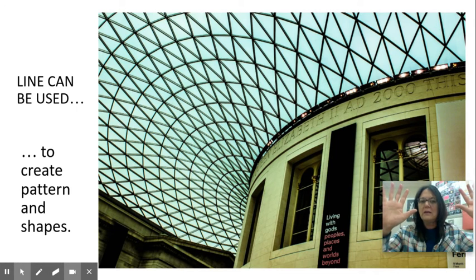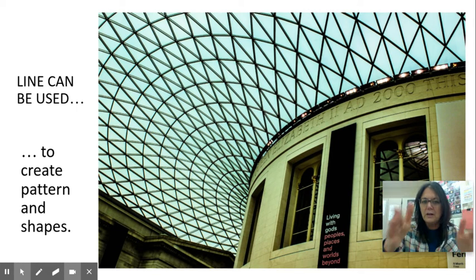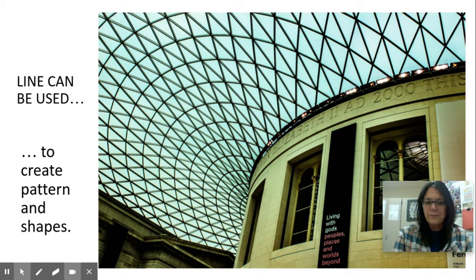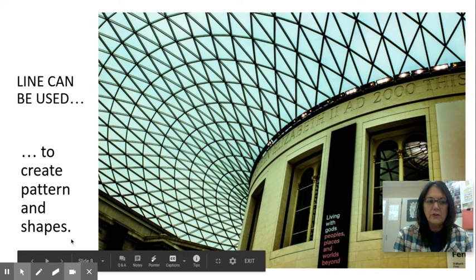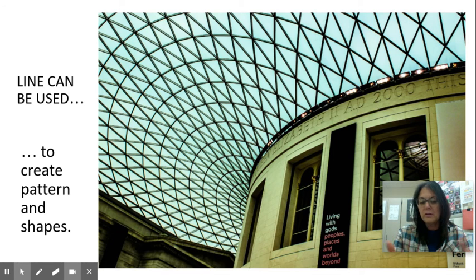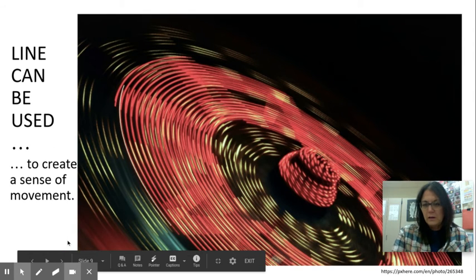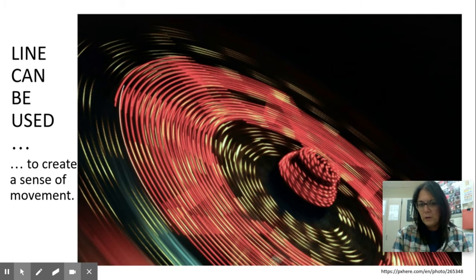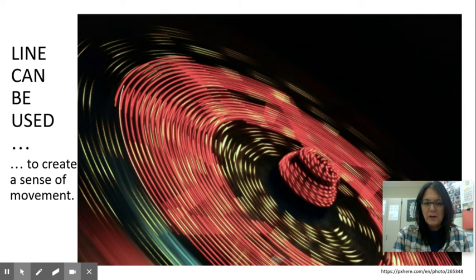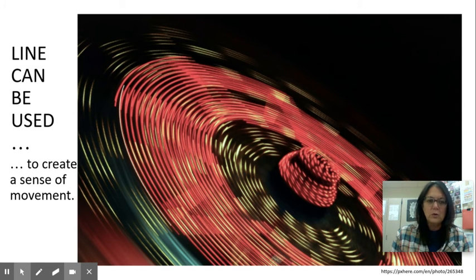This is just looking up at the ceiling of a building to create interest. You can see the interesting lines made in the architecture there. If lines create some type of a shape or pattern, that's very interesting to take a picture of. We're not sure what this was — it looks like maybe a roulette wheel or some kind of a ride. But sometimes lines can create a sense of movement, which is kind of cool too.